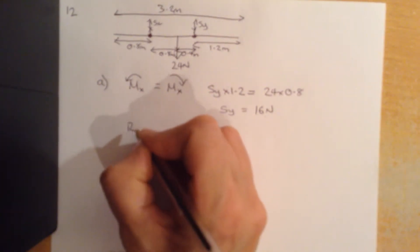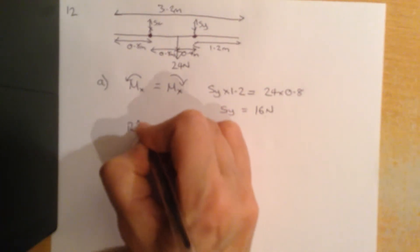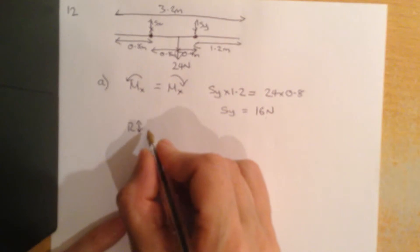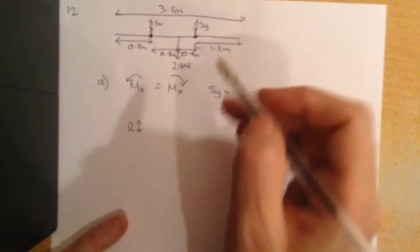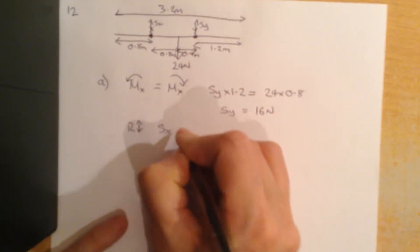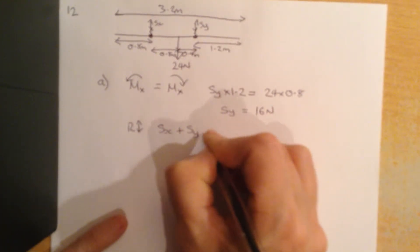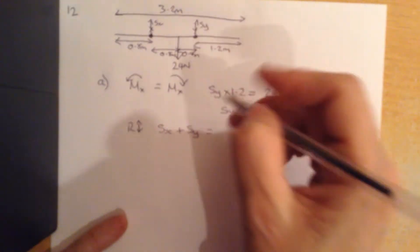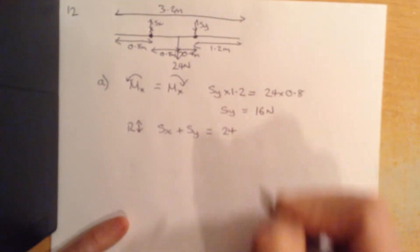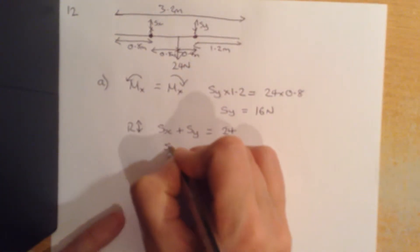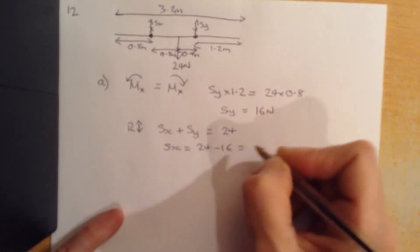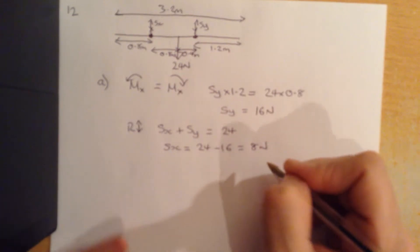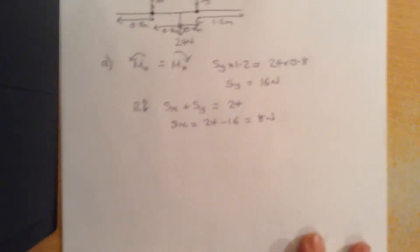So remember all we ever do is resolve horizontally, vertically and take moments. So I'm going to resolve vertically. So these two upward forces SX plus SY have got to be equal to the weight down, 24. So SX is 24 take away 16 which is 8 newtons. Good.